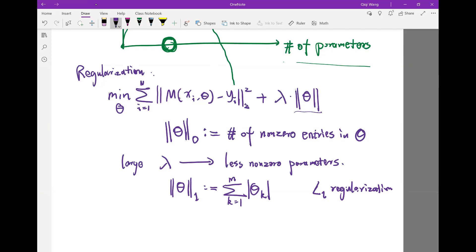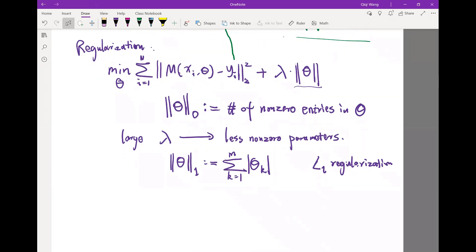While still it's going to be computationally efficient because unlike the L0 norm, this norm is actually continuous. And you can show that if the original objective function is convex, the resulting minimization problem is still convex.